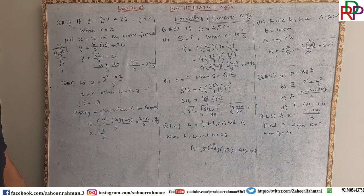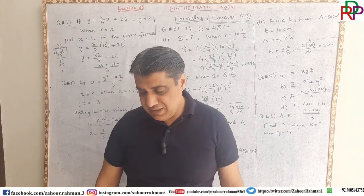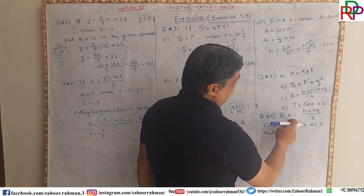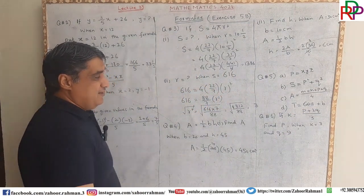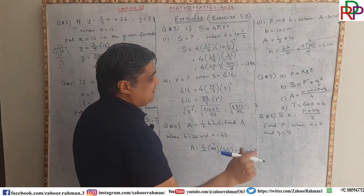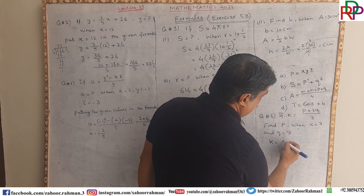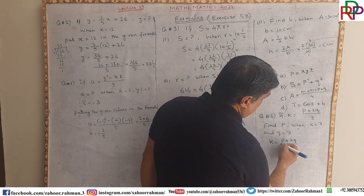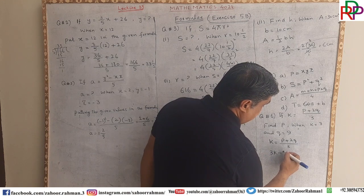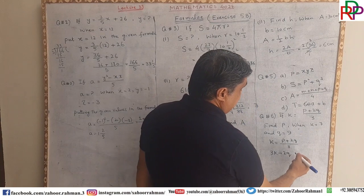Now we move to intermediate level questions. Question number 6 says: if k equals p plus 2q divided by 3, find p when k equals 7 and q equals 9. First we make p the subject. We write k equals p plus 2q divided by 3, then 3k equals p plus 2q, so 2gs is equal to p and rearranging, 3k minus 2q equals p.